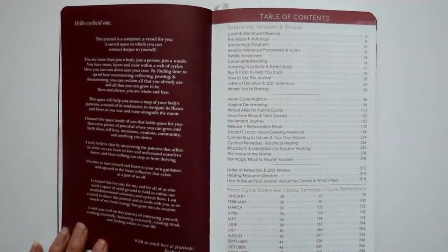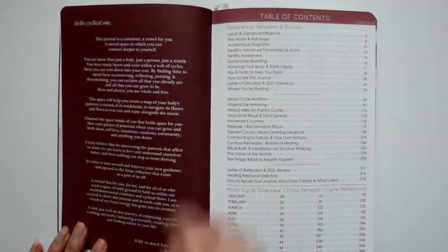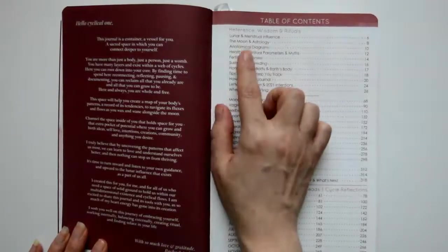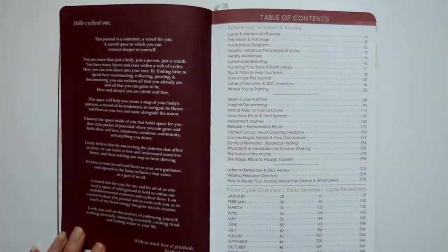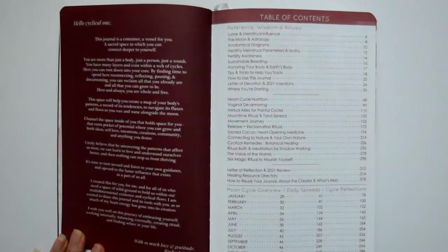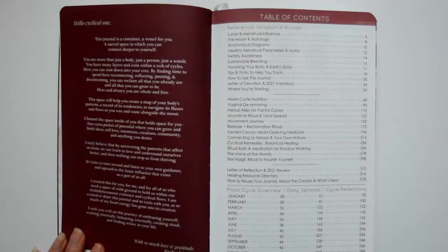I'm going to read through the table of contents here. It's got reference, wisdom, and rituals. So lunar and menstrual influence, the moon and astrology, anatomical diagrams, healthy menstrual parameters and myths, fertility awareness, sustainable bleeding, honoring your body and the earth's body, tips and tricks to help you track how to use this journal, letter of devotion and 2021 intentions, where you're starting.